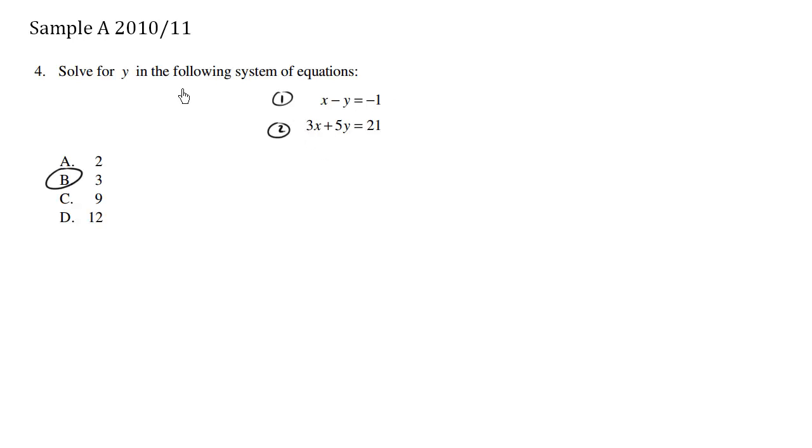So for example, if I want to solve for y, I'm going to actually try to eliminate the x's. And when I look at these two equations, I can multiply equation number one by three. So equation number one revised becomes times three becomes 3x minus 3y is equals to negative three. I multiplied everything by three, left side as well as right side.